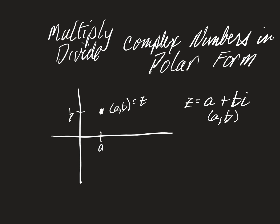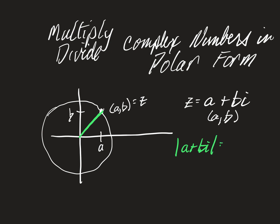Now, we want to get that point using polar form. Polar form is basically what circle is this on from the origin. We want to find the length of this, which we already know — that is the modulus of a plus bi, or the modulus of z. That's the length, which would be the radius. So r is equal to the modulus of our complex number.